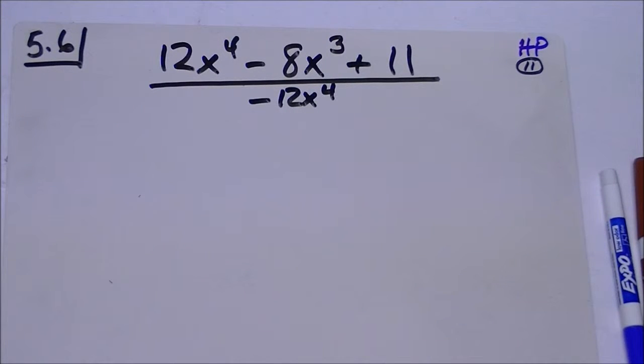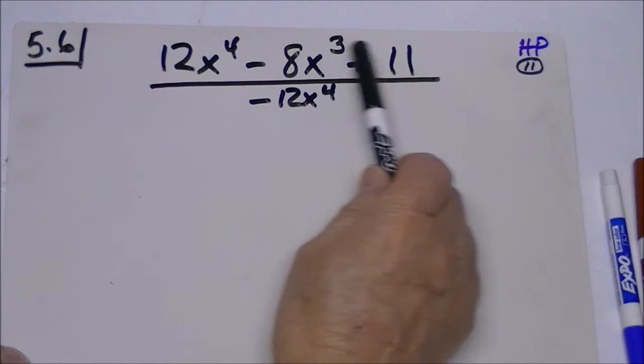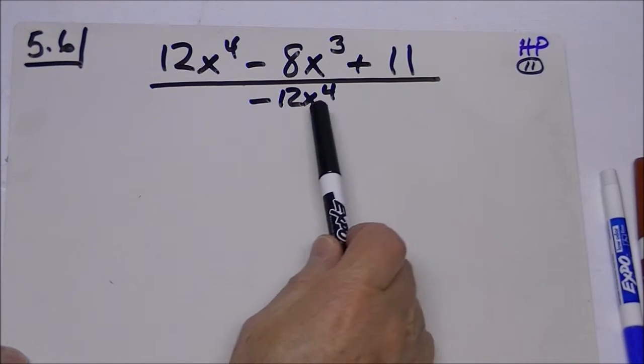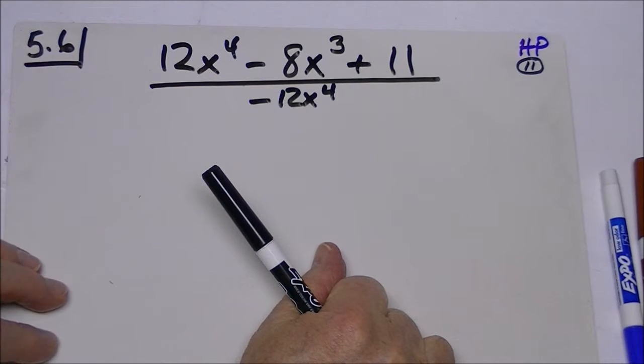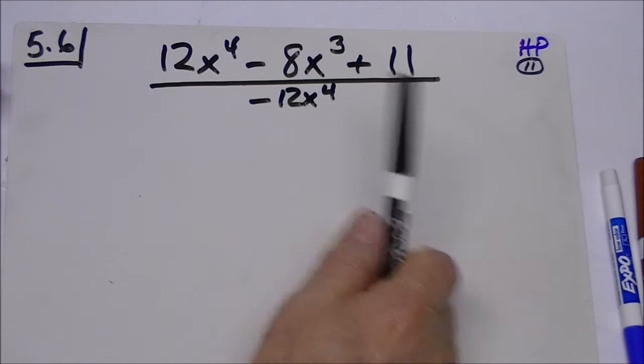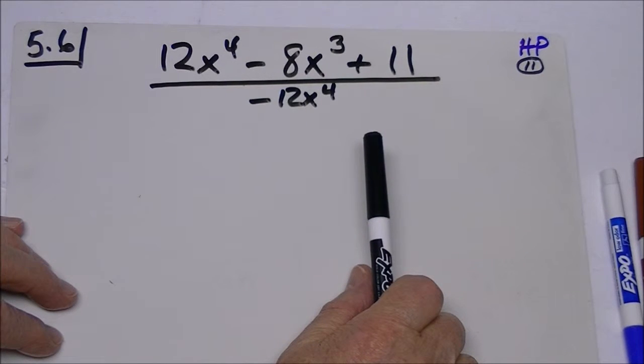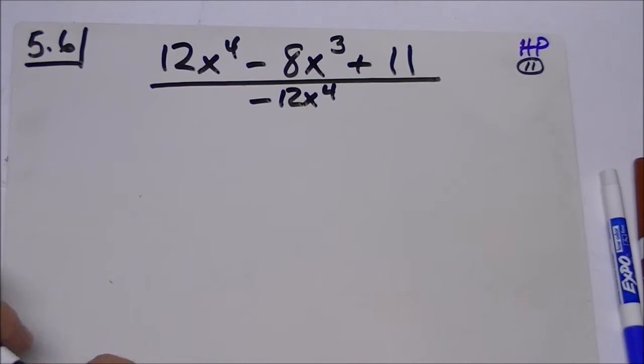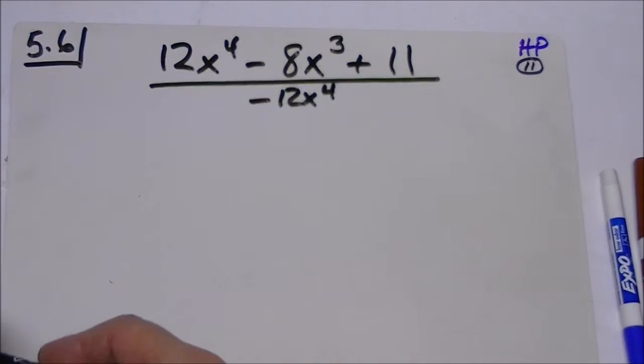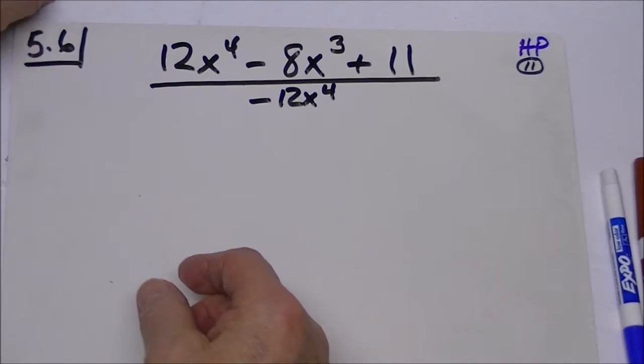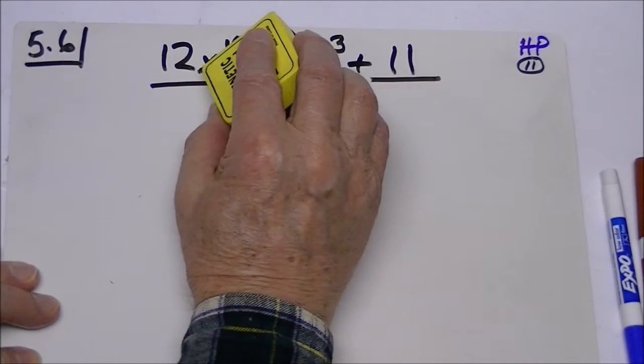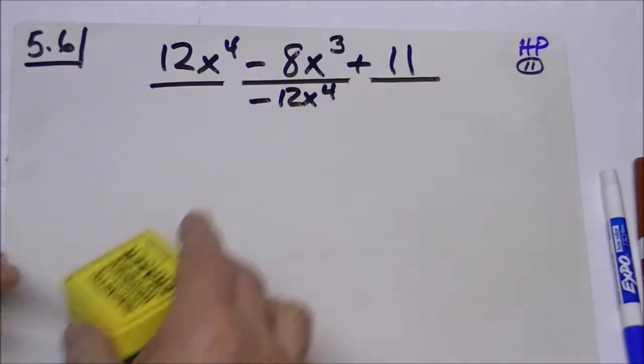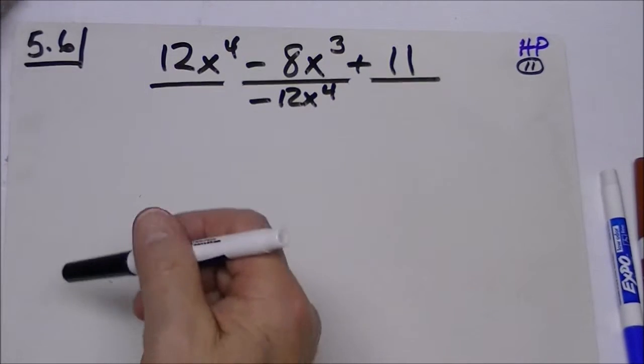What we'll be working on today is dividing a polynomial by a monomial. This is how you would see it, and you might ask what's the strategy. Well, the strategy is to put your common denominator under each term.